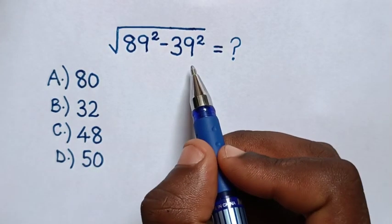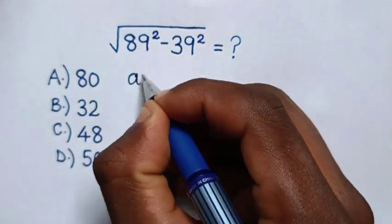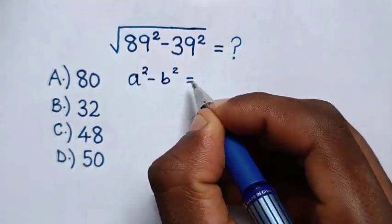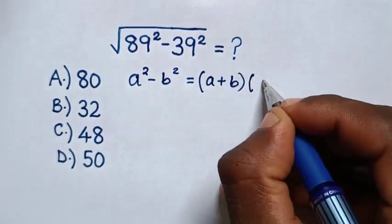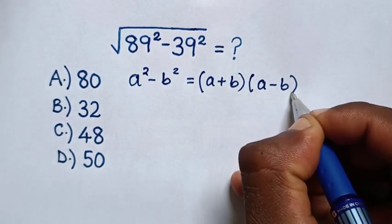So, from this expression under a square root, we'll apply the rule a square minus b square is equal to a plus b bracket times a minus b bracket.